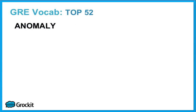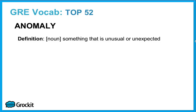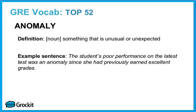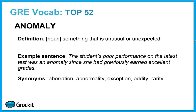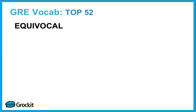The first word to know is anomaly. Anomaly is a noun, and it means something that is unusual or unexpected. The student's poor performance on the latest test was an anomaly since she had previously earned excellent grades. Synonyms: aberration, abnormality, exception, oddity, and rarity.